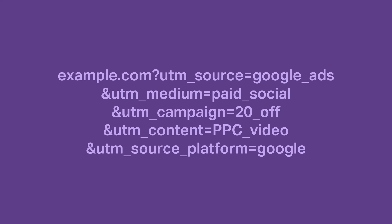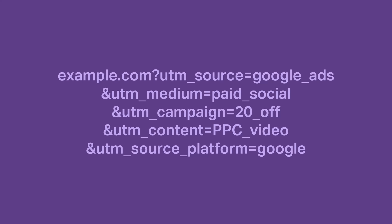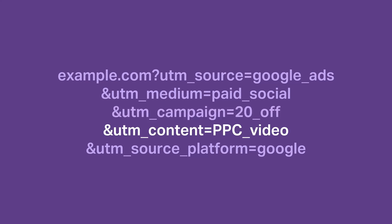Let's put this into context with some examples. Say you're running an ad campaign on social media. Your UTM source could be defined as the name of the social media platform's ad network. UTM medium might be paid social. UTM campaign would be the name of your ad campaign.